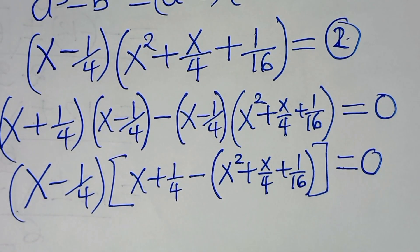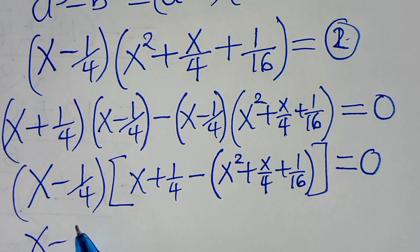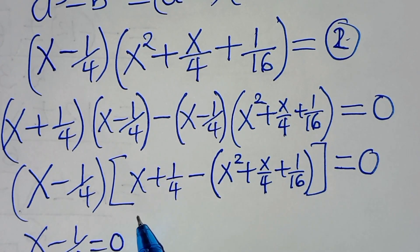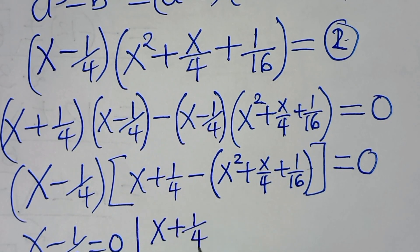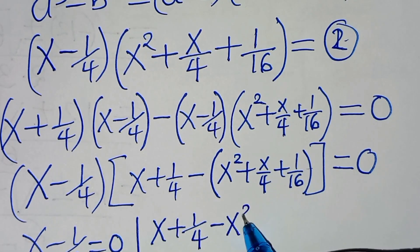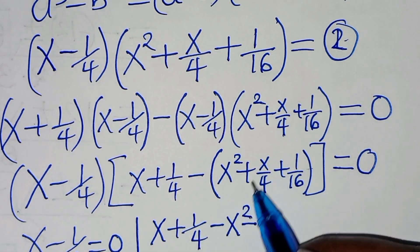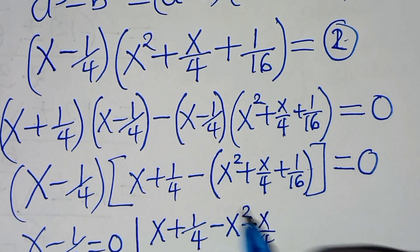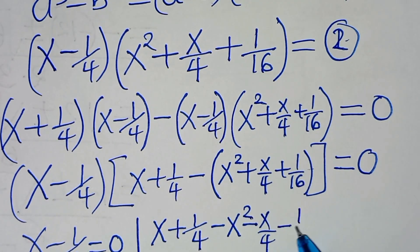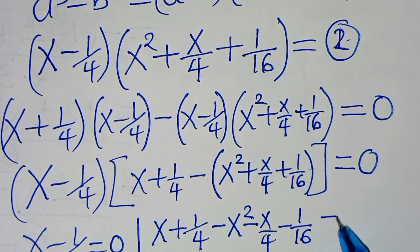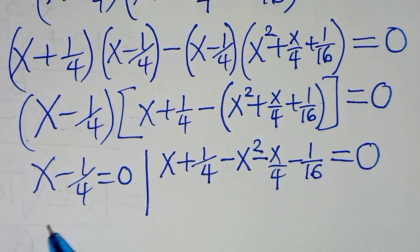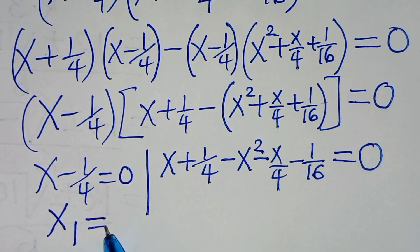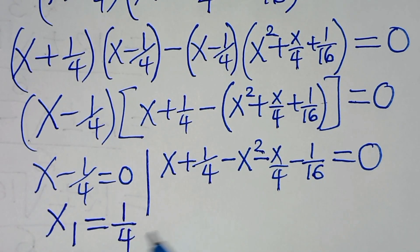This implies we have two parts. The first part is x minus 1 over 4 equals 0. The second part is x plus 1 over 4, minus x squared, minus x over 4, minus 1 over 16, this is equal to 0. From the first part, x1 is equal to 1 over 4. This is the first value of x, and it is a real solution.